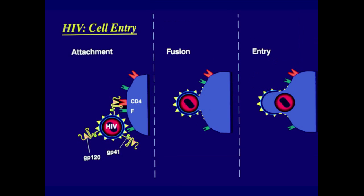HIV attaches to the cell membrane generally via the CD4 molecule, but it needs other attachment sites — chemokine co-receptors. It binds to these and brings a fusion particle from HIV close to the membrane. The particle then fuses with the cell, the virus injects its nucleus into the cell, and begins the replicative cycle.